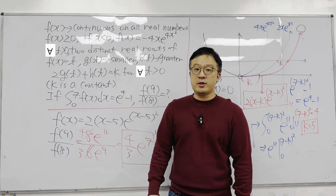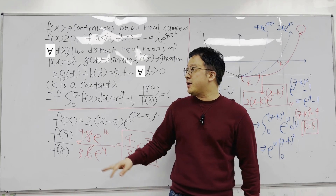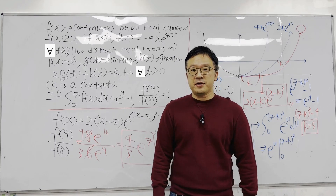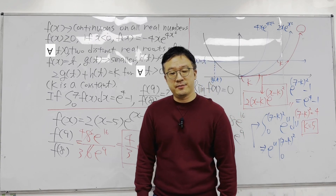That's the answer: (4/3) e to the 7. A pretty interesting calculus question from the 2024 Korean SAT Math. I'll be back with more videos and questions like this soon.